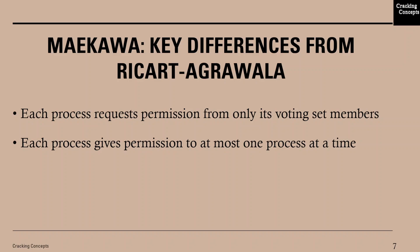Now let us look into the key differences between Maekawa's algorithm and Ricart-Agrawala. In Maekawa's algorithm, each process requests permission from only its voting set members and not from all n processes. Also, each process in the voting set gives permission to at most one process at a time.